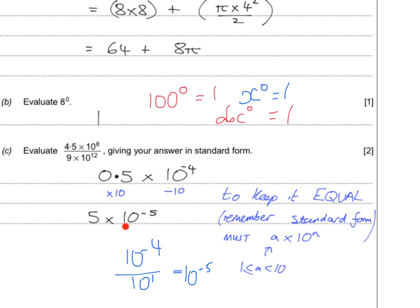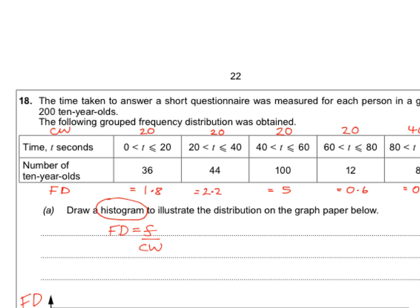For the final question, way too many people read that it was a histogram and just drew a standard bar chart or grouped frequency diagram. The last question of a GCSE will not be that simple — if you think it is, you've missed something. A number of people still wrote down the frequency density formula but then missed what to do with it. A histogram is different to a bar chart because it is plotted against frequency density, not frequency, and the bars are of unequal width.